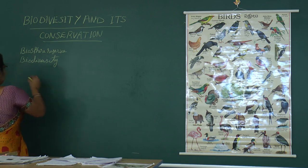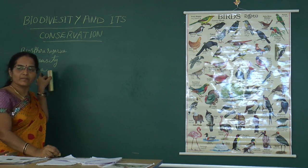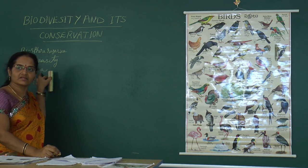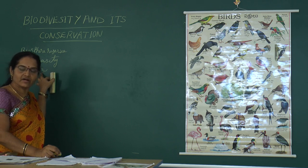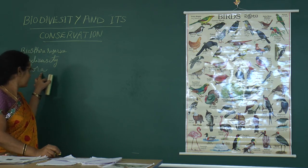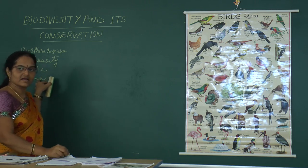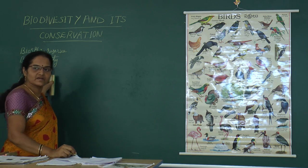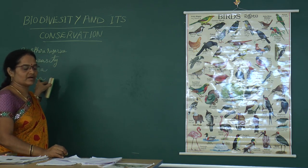Next word: flora. The various types of plants on the earth is known as flora. Next: fauna. Fauna means the various types of animals on the earth is known as fauna.